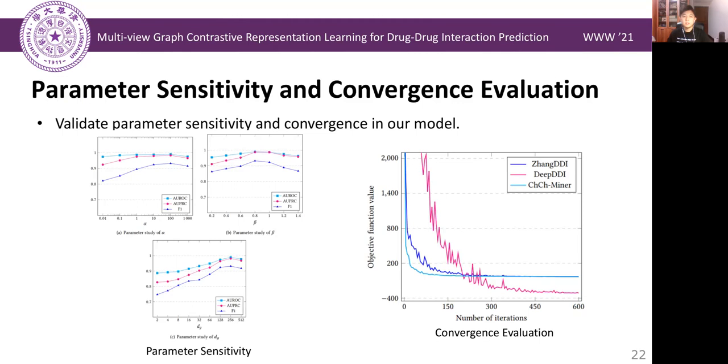In the final objective function of our model, there are two major parameters, alpha and beta. We evaluate the impacts of them. Finally, we find the optimal values of them, which are 0.8 and 100, respectively.